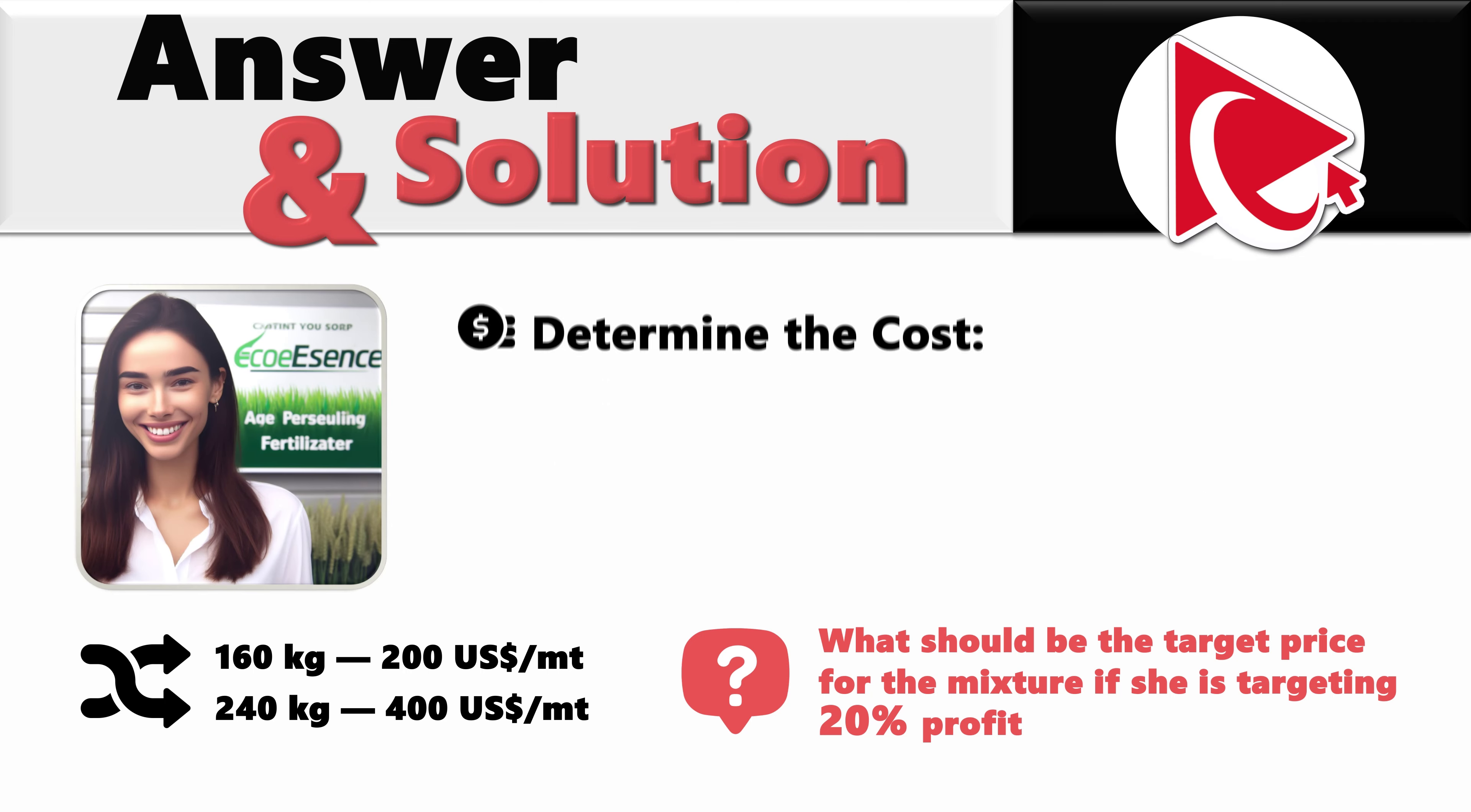Once we understand what we're dealing with here, our first step would be to determine the cost. For the first fertilizer, the cost would be 160 kilograms multiplied by 200 divided by metric ton, which is 1000 kilograms, which would be equal to $32.